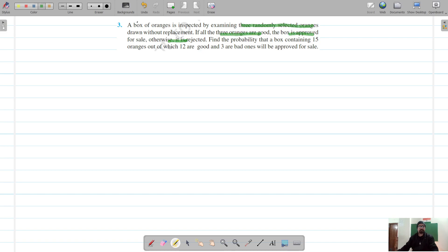We will have to check what is the probability of a box that contains 15 oranges, out of which 12 are good and 3 are bad. We have to check what will be its probability to be approved for sale. In this case, the three oranges are randomly drawn without replacement.